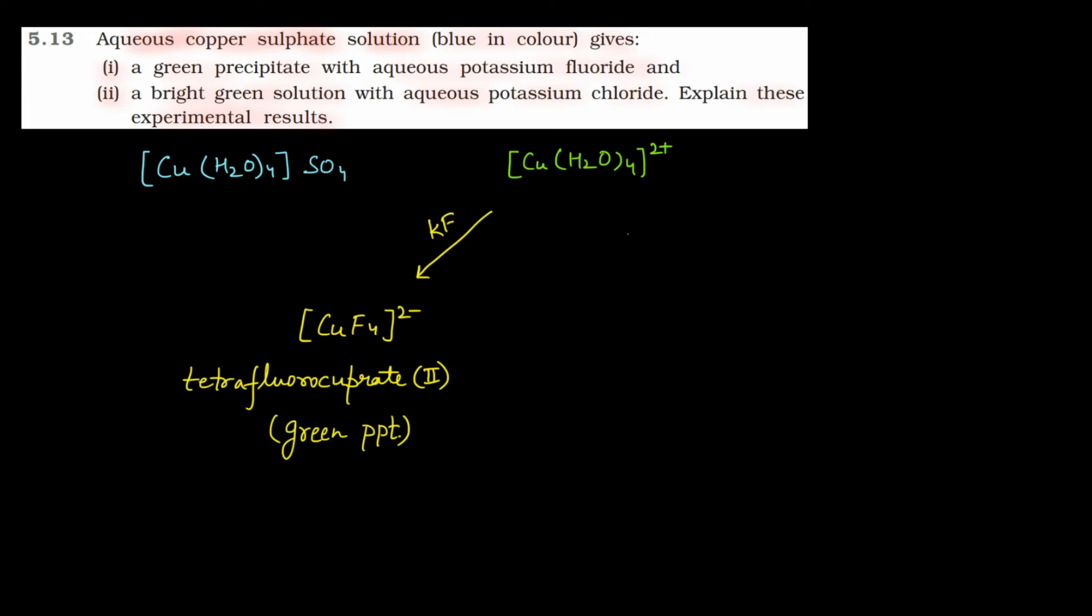What is the second part? In the second part, you add aqueous copper sulfate solution with aqueous potassium chloride, meaning KCl. Here will be Cl- ligands. These Cl- ligands will replace water ligands. So here will be [CuCl4]^2-. This is tetrachlorocuprate 2.